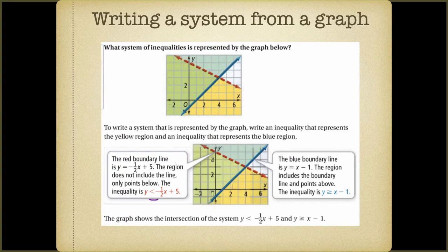For the blue line, it has a slope of one and crosses the y-axis at negative one, so the equation is y equals x minus one. There's a shaded blue region above the blue line, giving us a greater-than-or-equal-to inequality: y ≥ x − 1. The common shaded area — where yellow and blue overlap — is green, and this is the solution area.